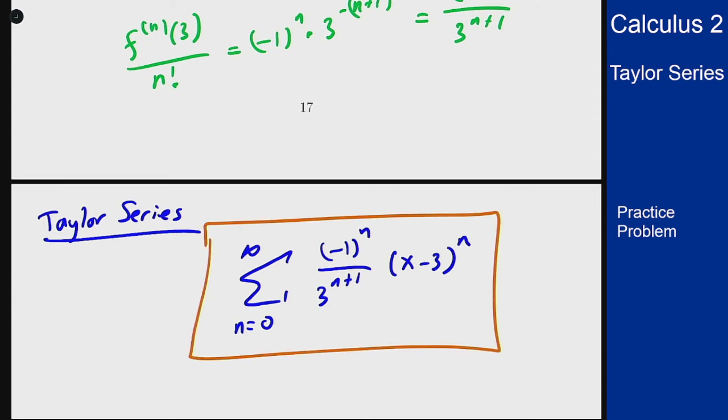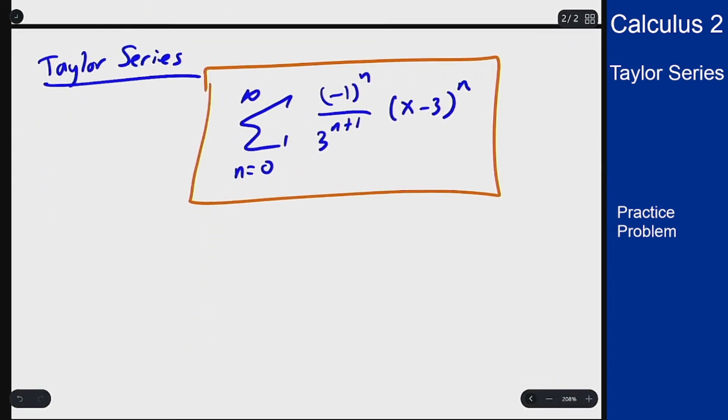Now the problem here did not ask for interval of convergence but you could use ratio tests to figure that out just the same and you would get that the convergence here via normal power series analysis is on 0 to 6. And it makes sense that this should not converge at 0 because at 0 the function is 1 over x and the function is not defined there. So that's how you can go through using derivatives to find a Taylor series.